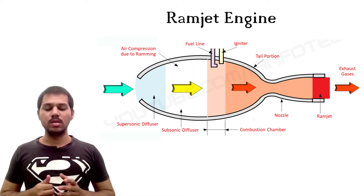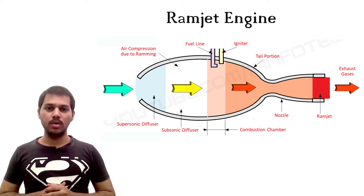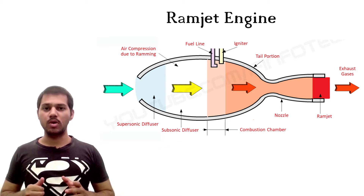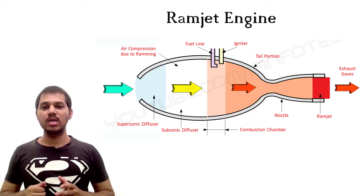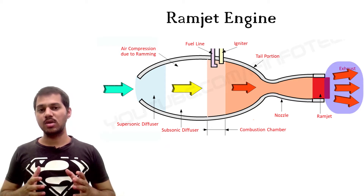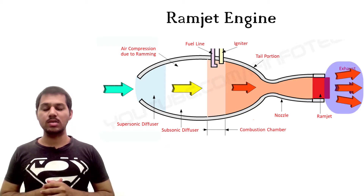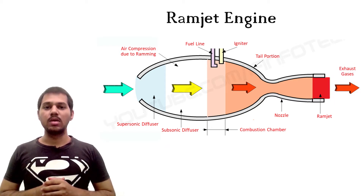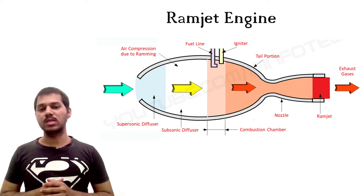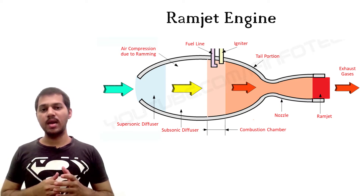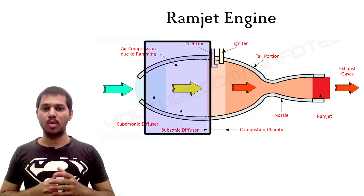In this session we are going to learn about the working of a ramjet engine. The engine uses thrust of exhaust gases to move the aircraft. The ramjet engine does not have any compressor — it entirely depends on ram compression.